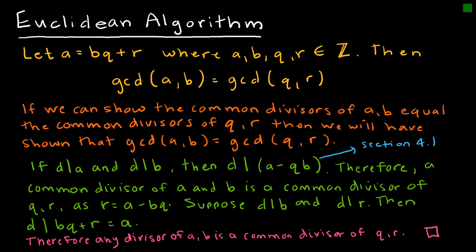Where A, B, Q, and R are all integers. Then the GCD, the greatest common divisor of A and B, is equal to the greatest common divisor of Q and R, which is the quotient and the remainder. So that is what the Euclidean algorithm says, and that's what we put into play just a few moments ago.